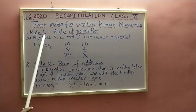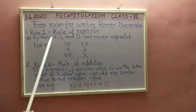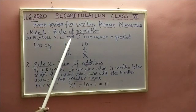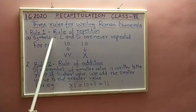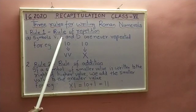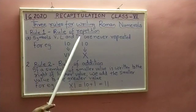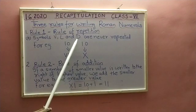The third point of rule number 1 is symbols V, L and D are never repeated. V will be representing 5, L is representing 50 and D is representing 500.